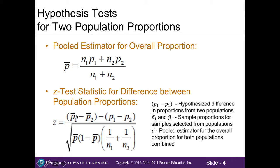With population proportions, we have to calculate the pooled estimator for our overall proportion, where we take our sample size of our first sample times the proportion of that sample, plus the sample size of our second sample times the proportion of the second sample, all divided by sample size one plus sample size two. Make sure to plug in your N's and P's in the correct place. Here is our Z test statistic for the difference between our population proportions.